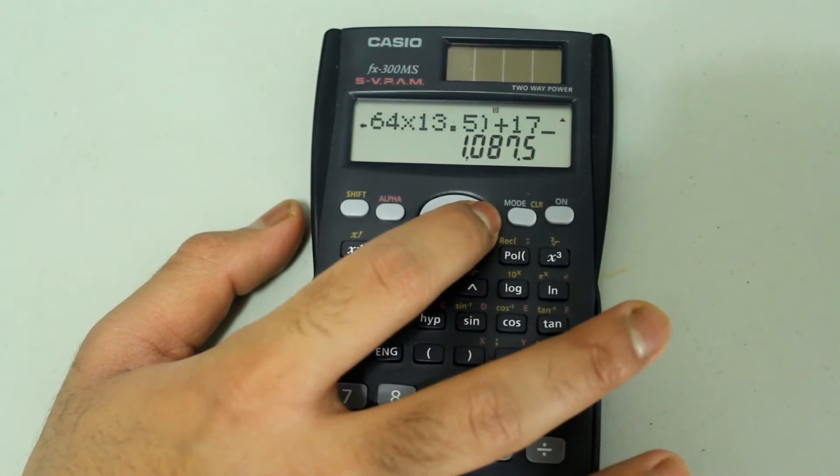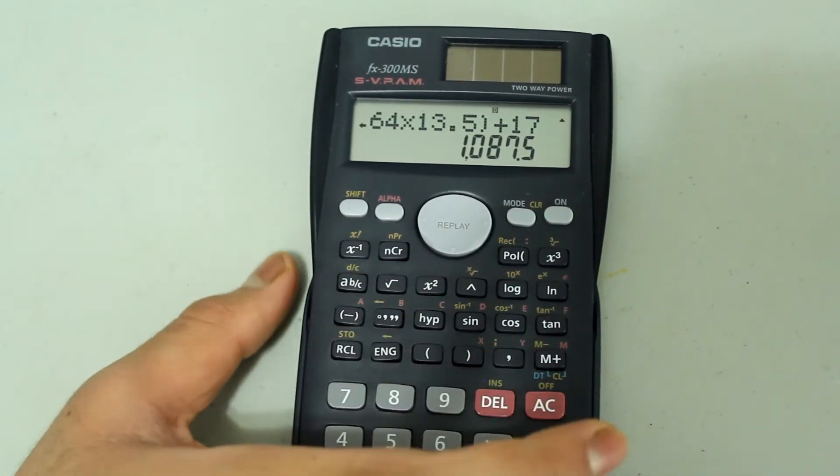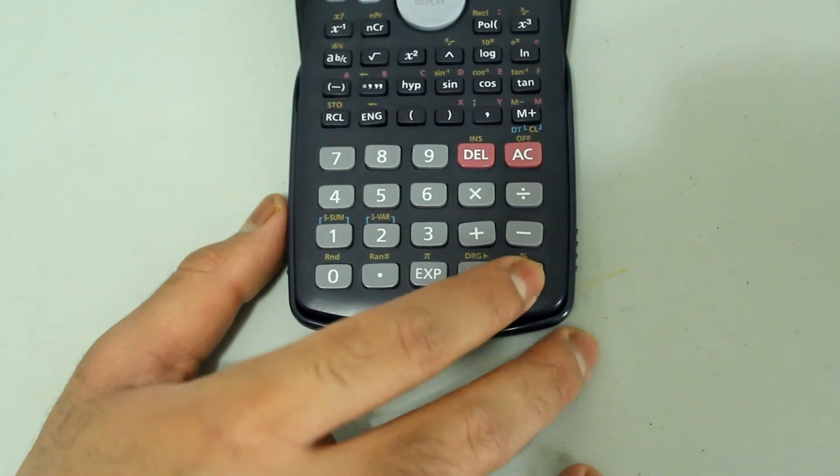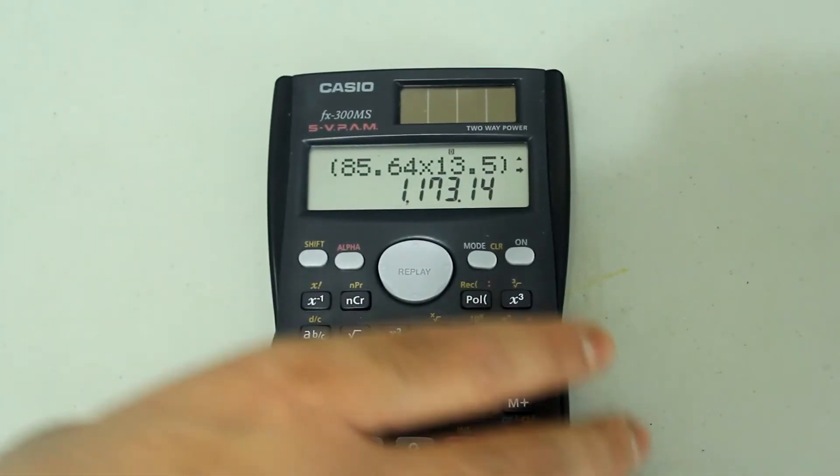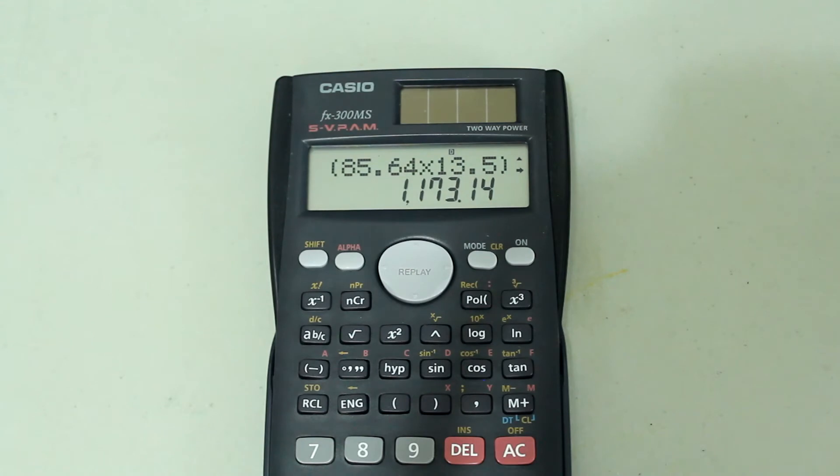I'm just going to arrow right to make sure everything else is okay, and then press equals. And I get the new answer without having to type in the whole entry again.